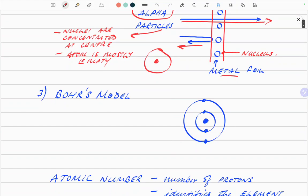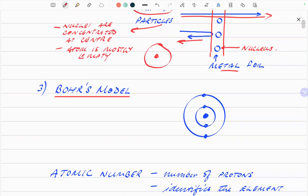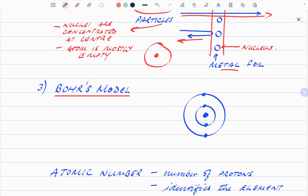The next development was Bohr's model. This was the one that led us to what we know today. Basically, you've got electrons orbiting the nucleus, and you've got different energy levels.